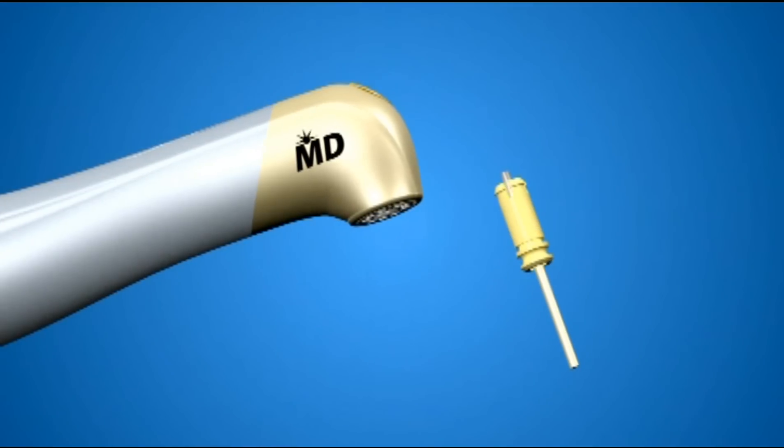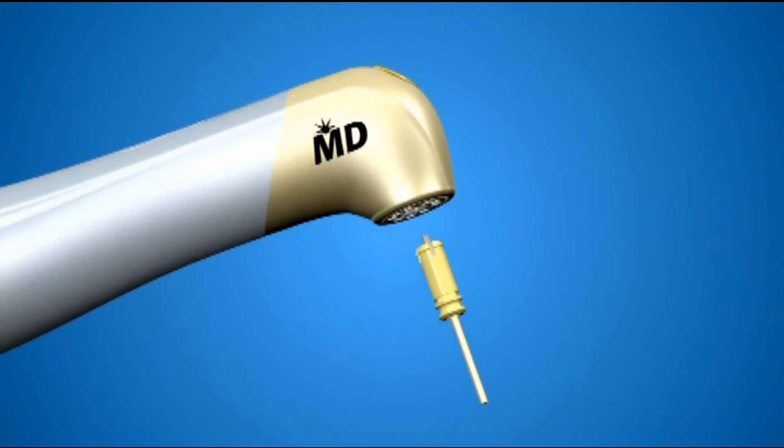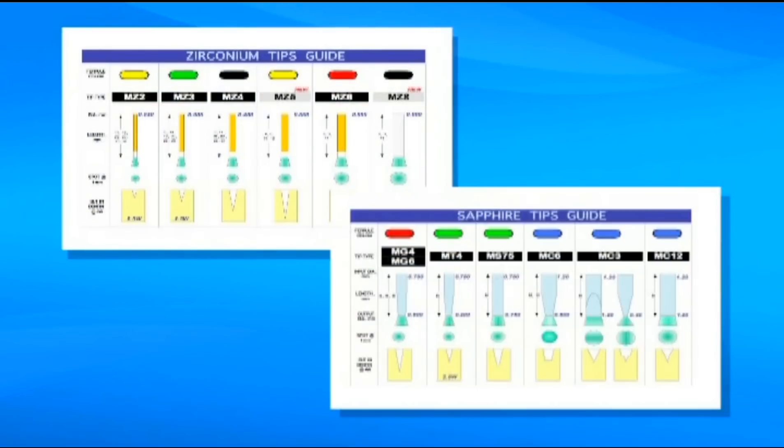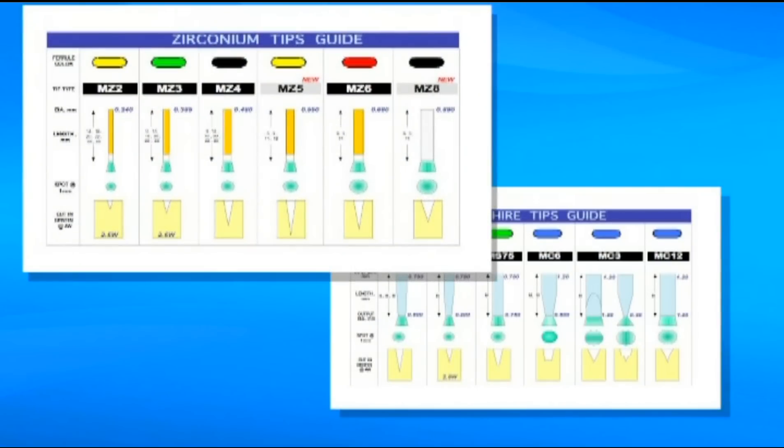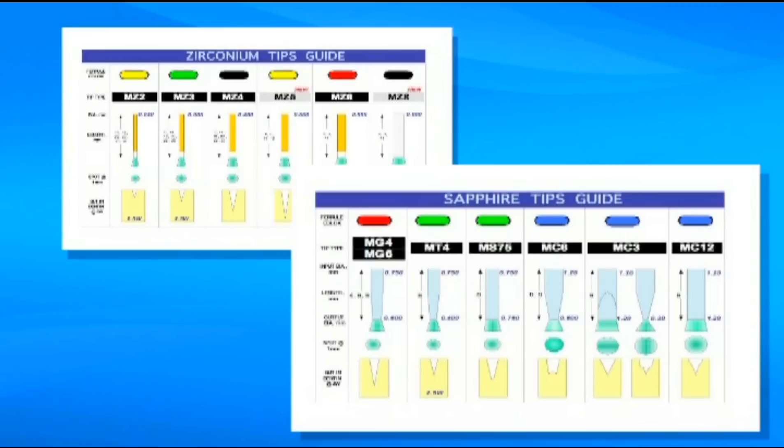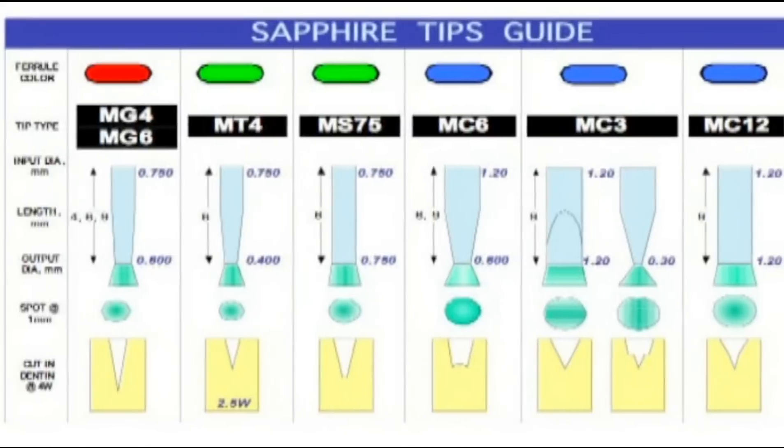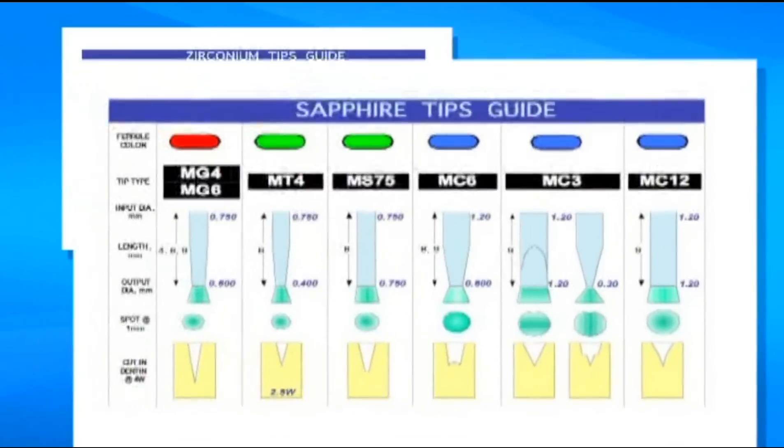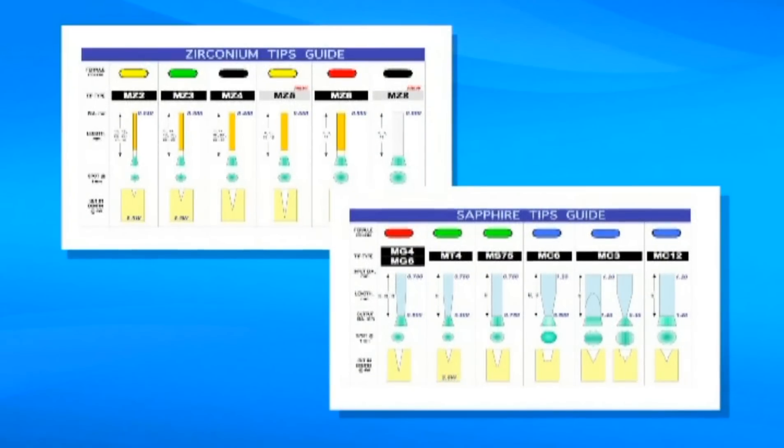For soft tissue procedures, use the MD Gold Handpiece with an appropriate tip. Laser tips come in many diameters, lengths, and shapes. There are single-use disposable tips and multi-use sapphire tips. Select the right laser tip, like you select the right burr, based on the procedure you want to perform. There are convenient tables to help you decide.